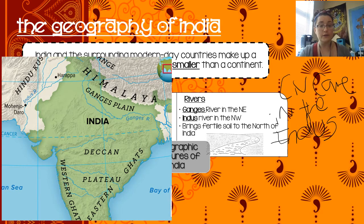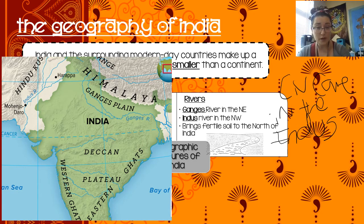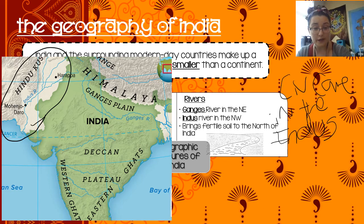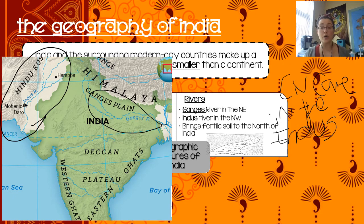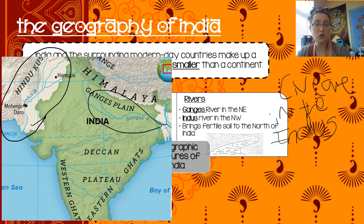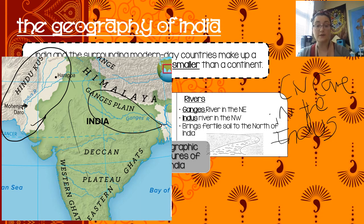Looking at our map, we've got our Indus River up here and our Ganges River. The first settlers in India settled along that Indus River. We watched that video about Mohenjo-daro — that city was right here. And then eventually over time they spread down, but we're going to start right here on that Indus River Valley.